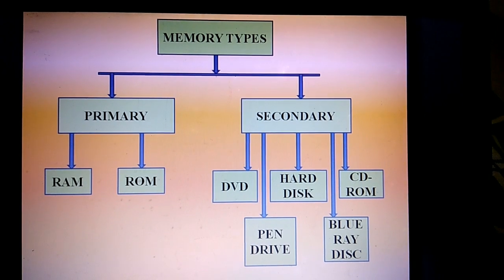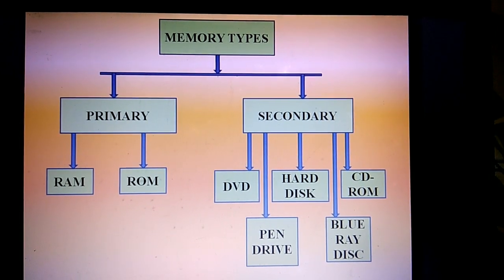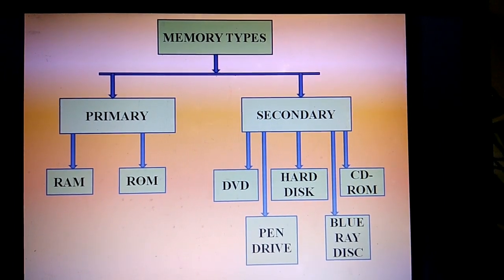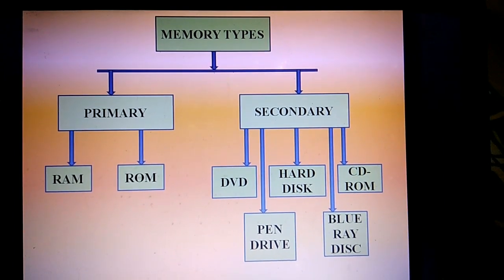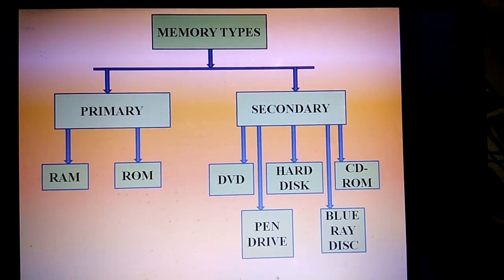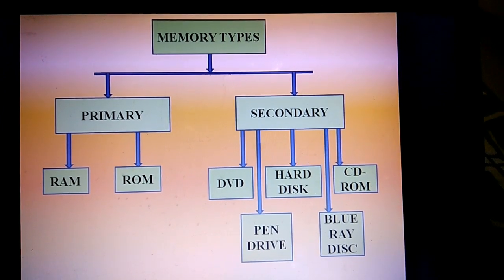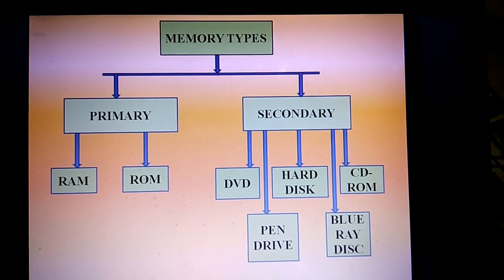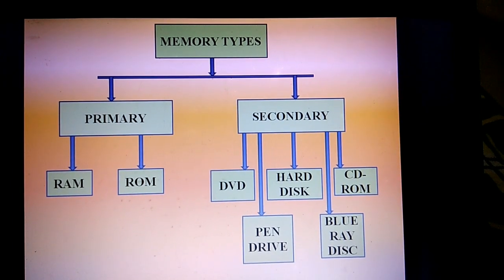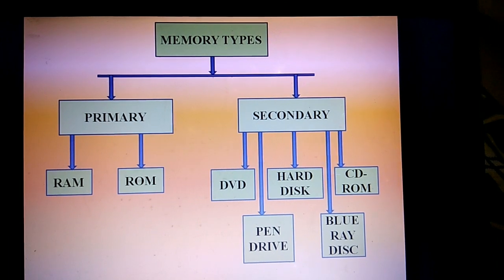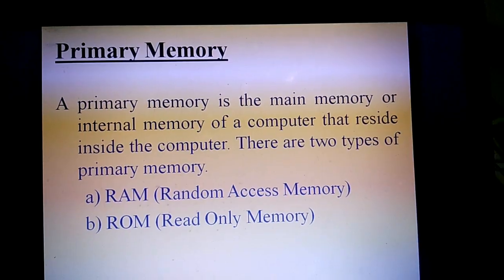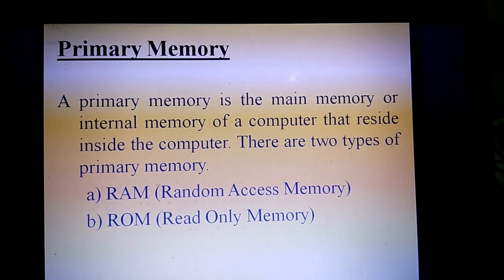Computer memory is divided into two parts: the first is primary memory and the second is secondary memory. Primary memory is further divided into two parts — RAM and ROM. Examples of secondary memory include DVD, hard disk, CD-ROM, pen drive, and Blu-ray disc. This chart shows how the memories are divided.